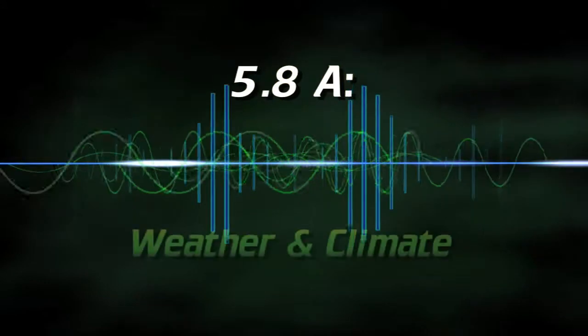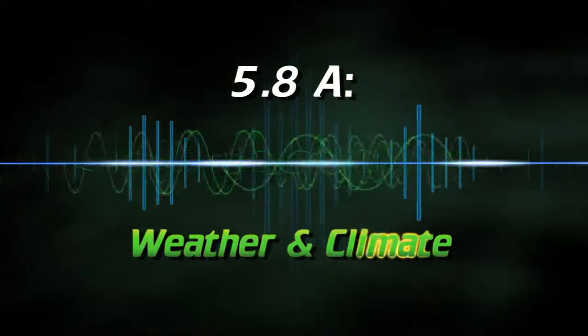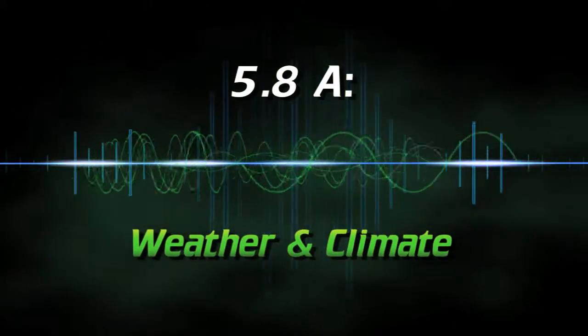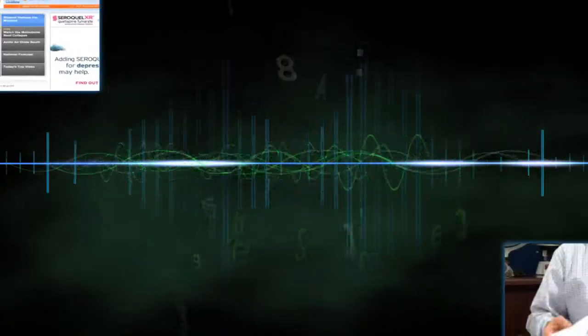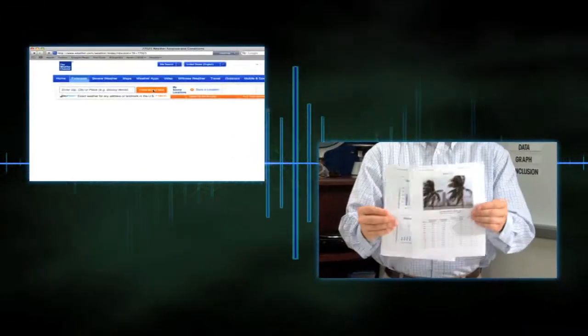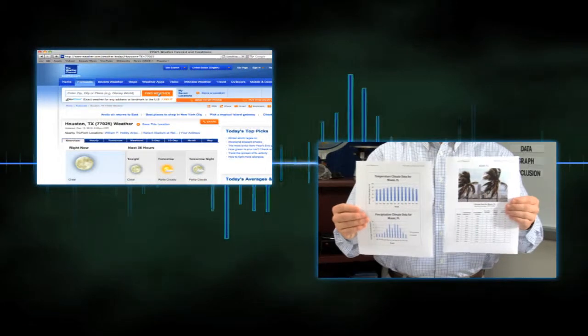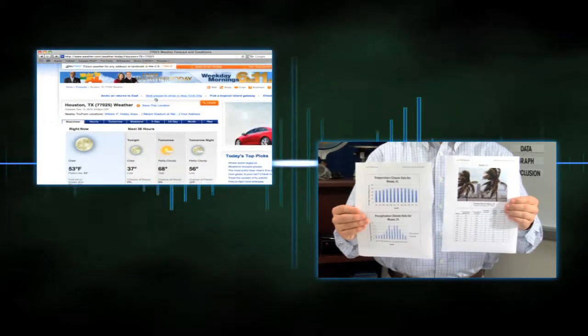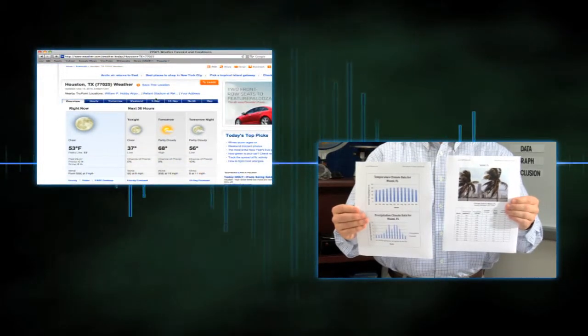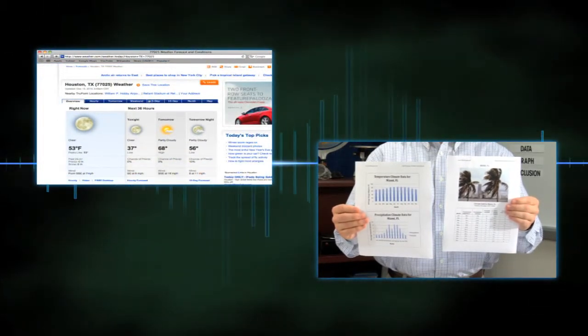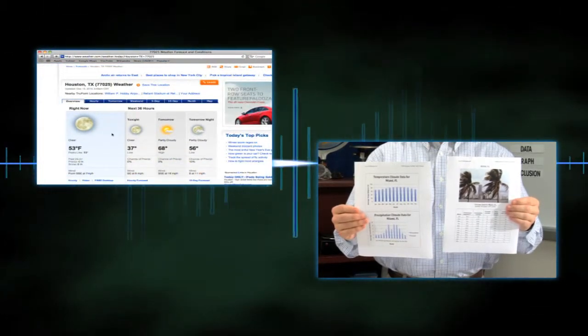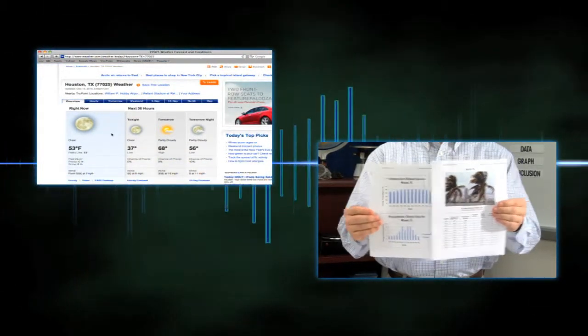5.8A Weather and Climate. In this activity, students analyze weather and climate data from six cities in order to match the city to its conditions.